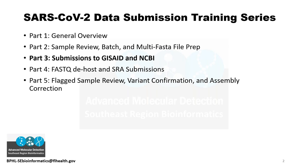After part three, we'll have individual calls with each jurisdiction if you'd like to troubleshoot submissions or need clarification. Please let me know if one of the scripts doesn't work with your data files. After that, we'll have part four and part five to go over the FASTQ de-host — to remove any human reads from FASTQ files — and SRA submissions. Part five may cover FLAG sample review, variant confirmation, and assembly correction.